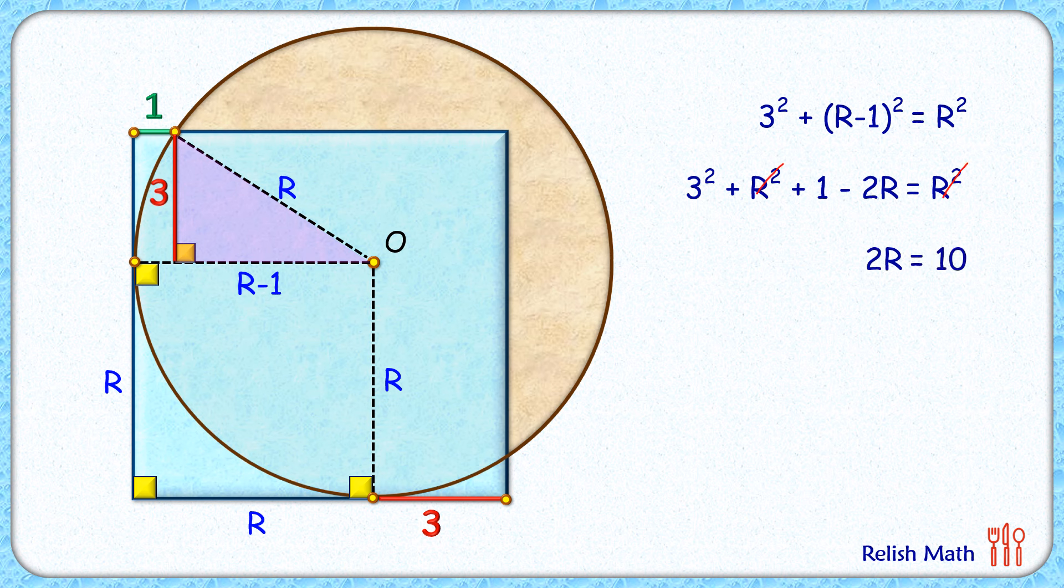Solving it, we'll get 2R = 10, or R = 5 centimeters, and that's our answer. I hope you enjoyed the solution. I will see you in the next video. Till then, tata bye bye.